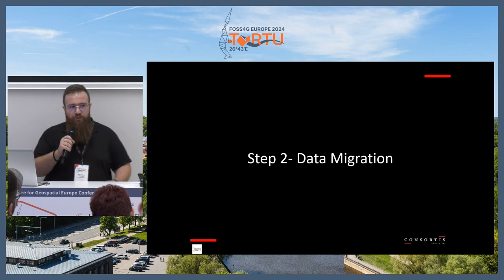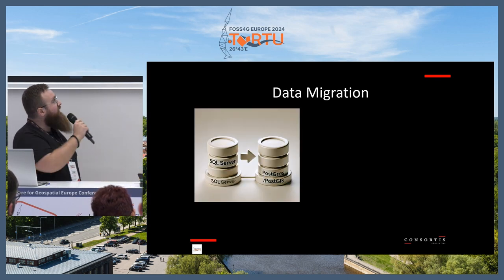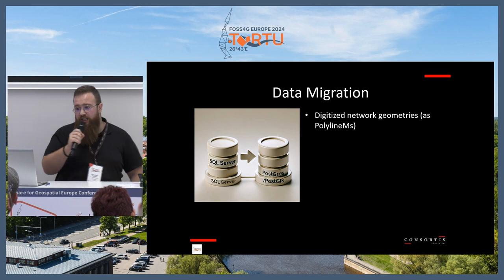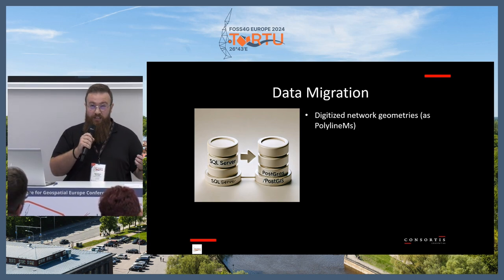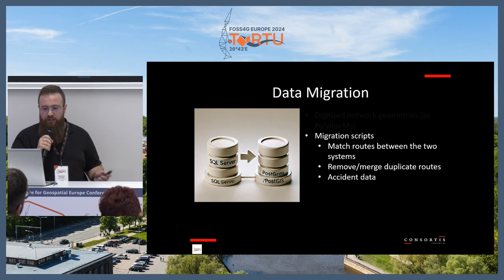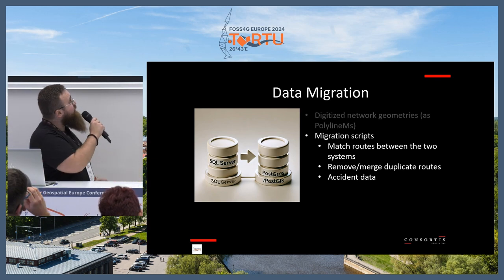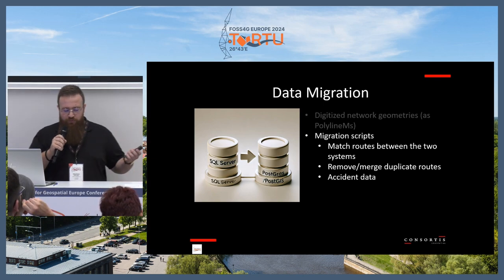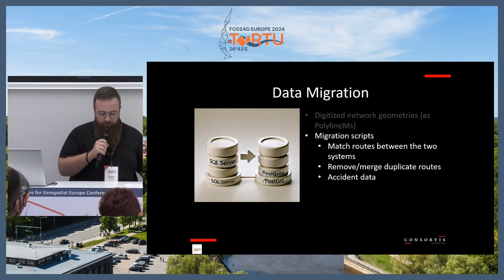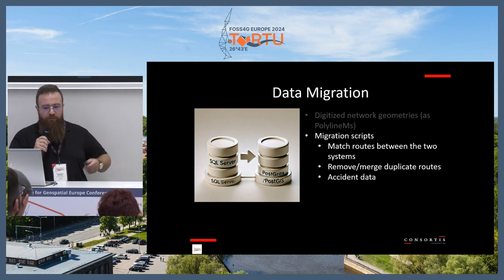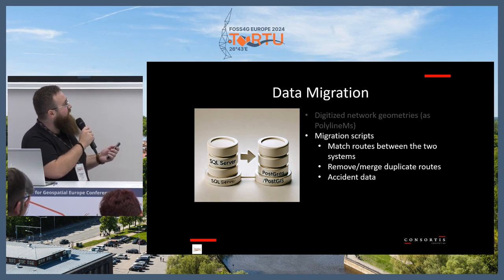We went for the second step, which was data migration. We digitized the network geometries and attributes from scratch. We created migration scripts where the most difficult part was to match routes between the older system and the newer one, and to remove or merge duplicate routes. After that, we went for the accident data migration.